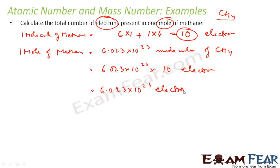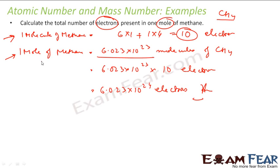To summarize: one molecule of methane has 10 electrons, and one mole of methane has 6.023×10²³ molecules. To find the number of electrons in one mole of methane, we multiply these many molecules by 10 electrons per molecule.